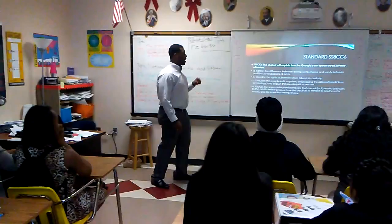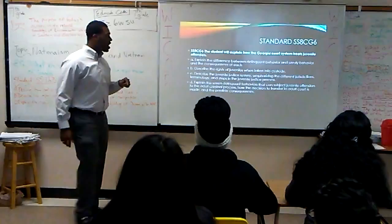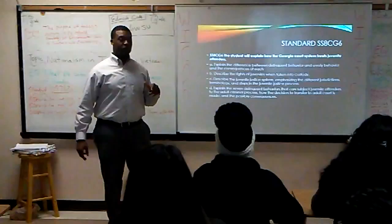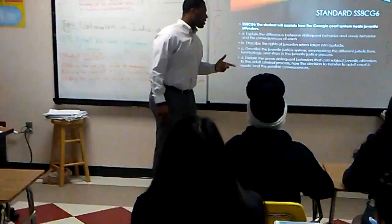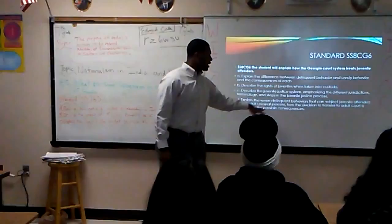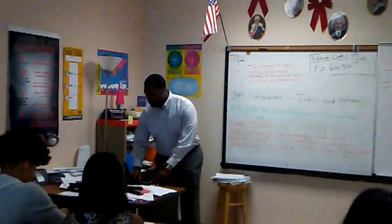This is our standard: the student will explain how the Georgia court system treats juvenile offenders. First, explain the difference between delinquent behavior and ruling behavior and the consequences of each. B, describe the rights of juveniles when taken into custody. C, describe the juvenile justice system and emphasize the different jurisdictions, terminology, and steps in the juvenile justice process.